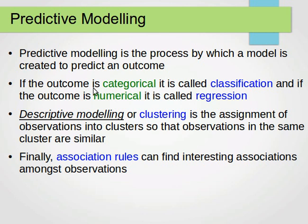If the outcome is categorical, then the process is called classification. If the outcome is numerical — continuous — then the process is called regression. I hope you're familiar with variables and variable types, including categorical and numerical variables and how to transform between them; if not, please go and watch my data exploration and analysis tutorial.